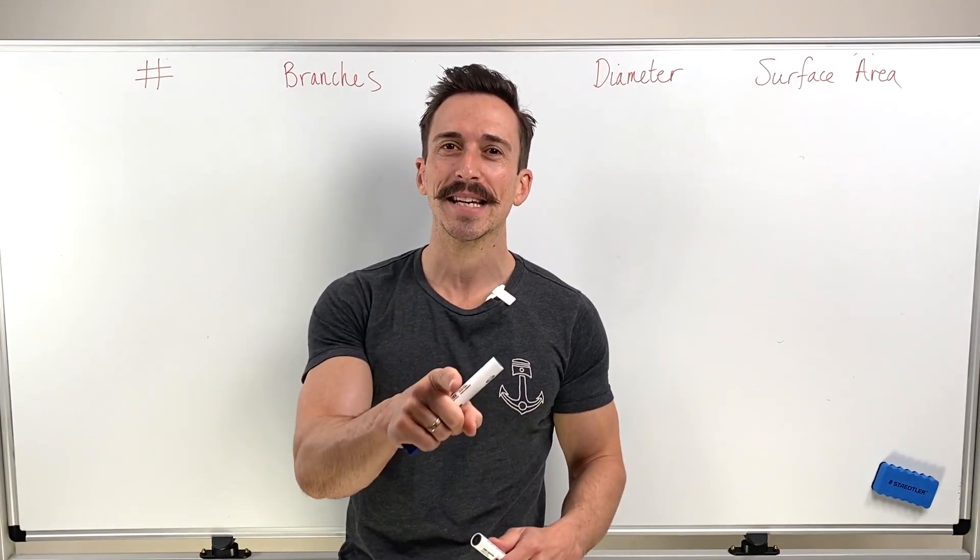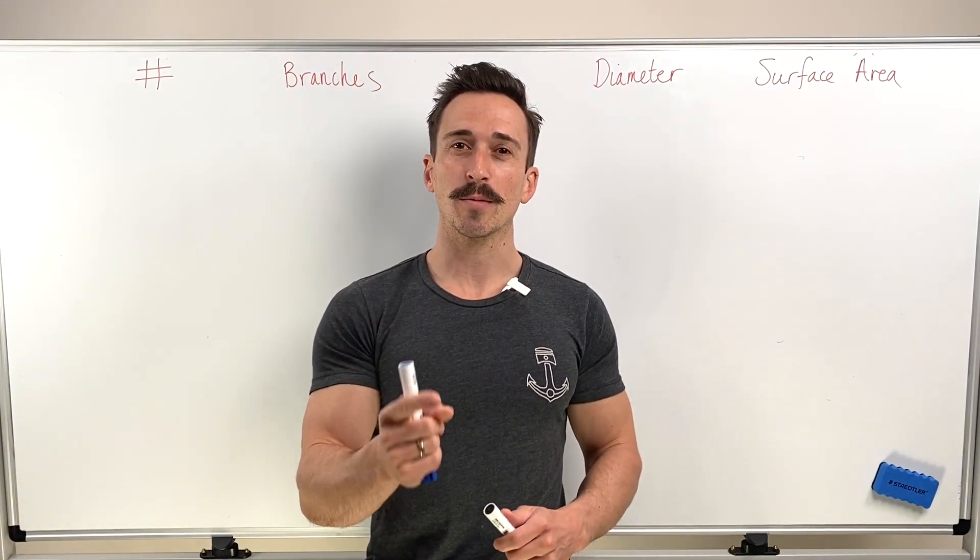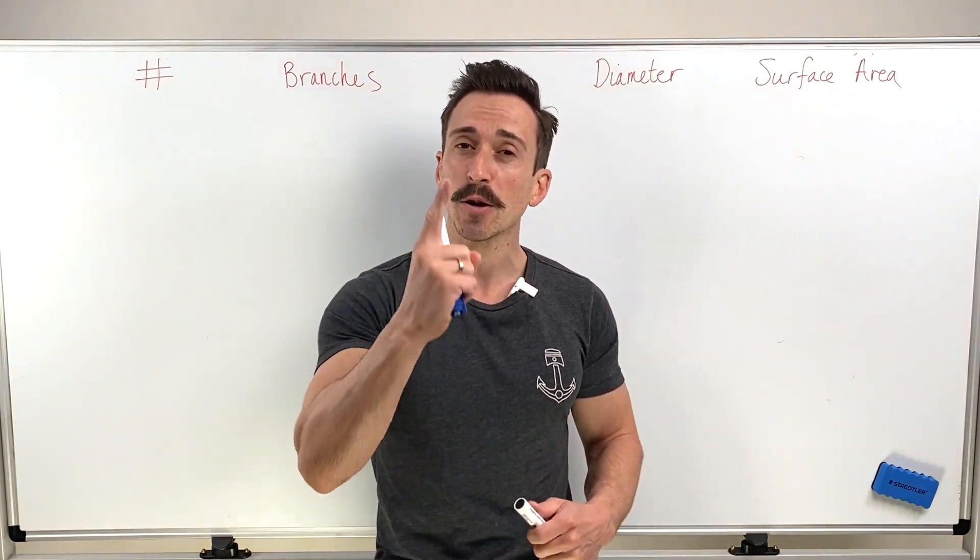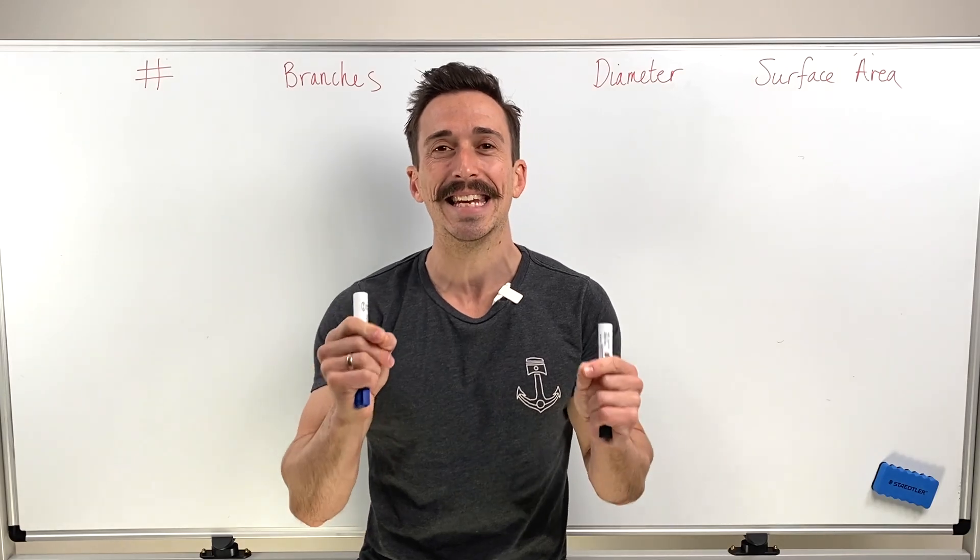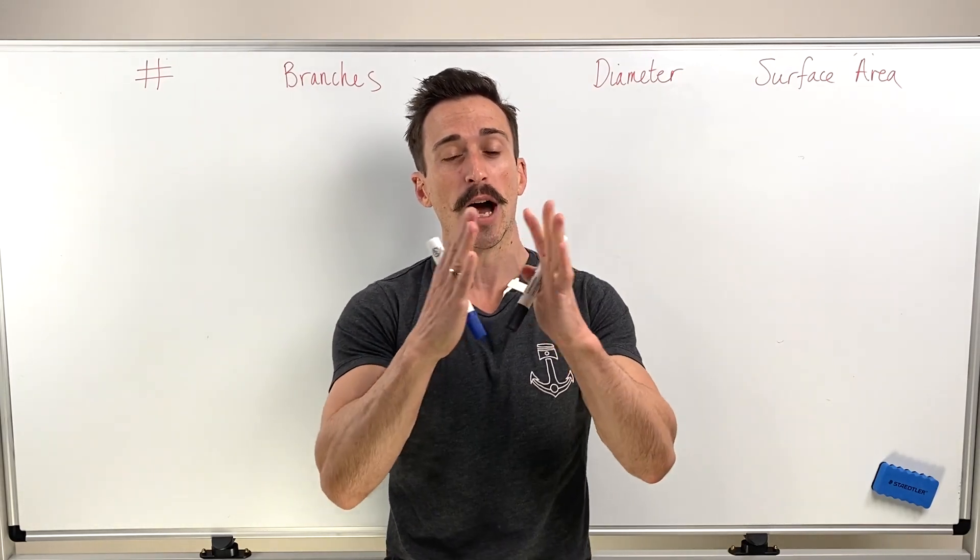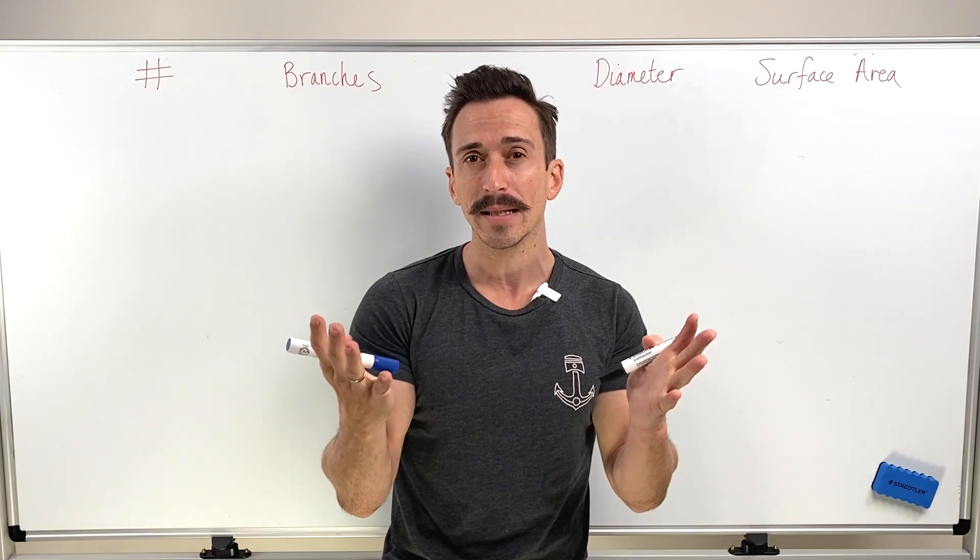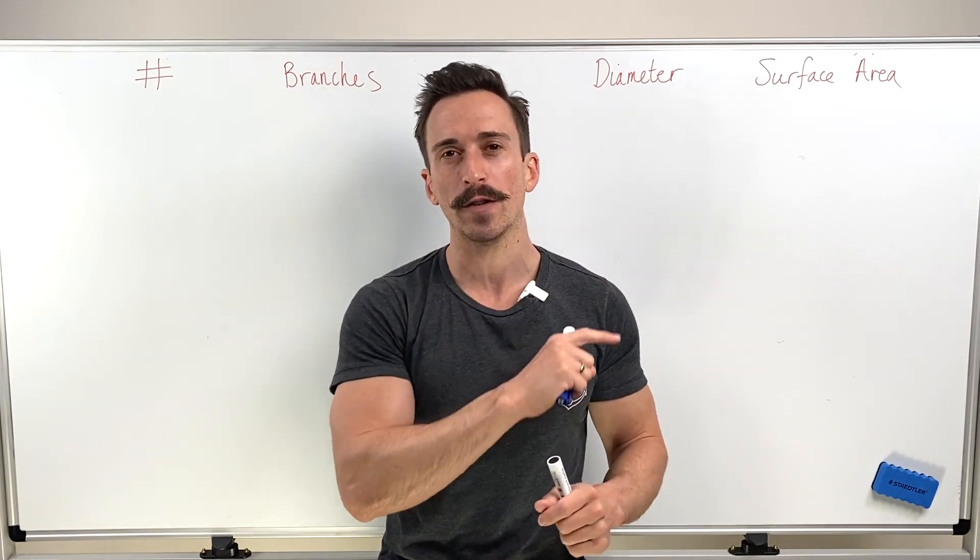Hi everybody, Dr. Mike here. In this video we're going to take a look at the respiratory tree. I'm going to show you how we can start off with a single pipe, the trachea, and go all the way down to up to 500 million individual alveoli. We're going to have a look at the changes in the diameter of these tubes and airways and also the changes in surface area.